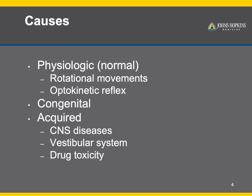Congenital nystagmus is when the nystagmus occurs from birth and is usually discovered by the time a child is a few months old, while acquired nystagmus occurs after the age of six months. Some causes of acquired nystagmus include disease of the central nervous system, disease of the vestibular system, as well as toxicity from drug or metabolic conditions.